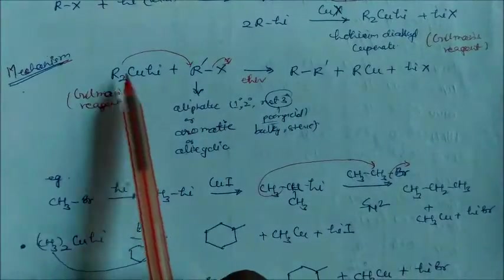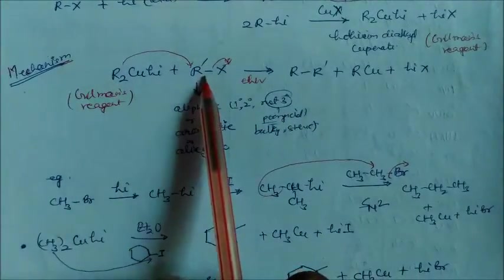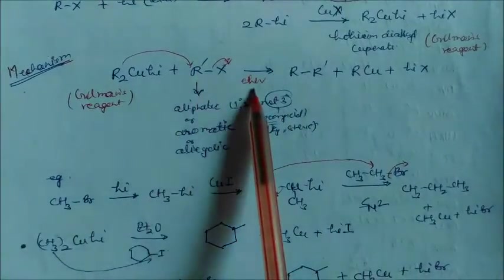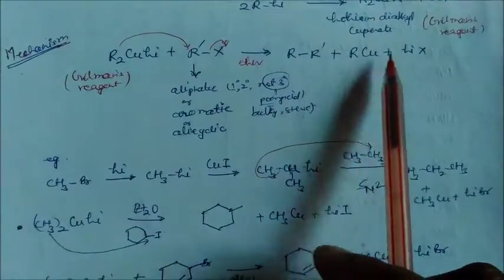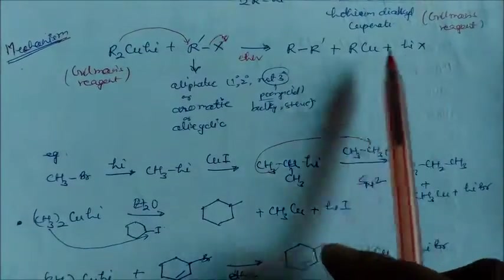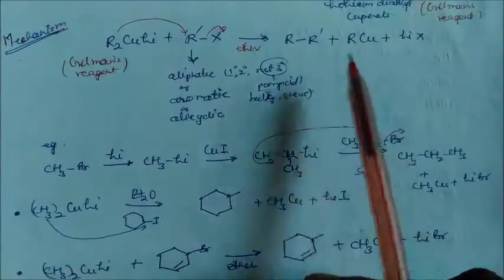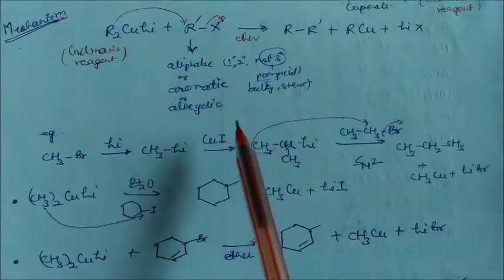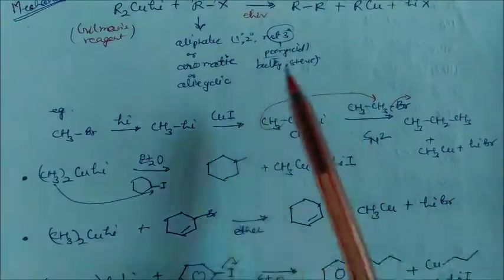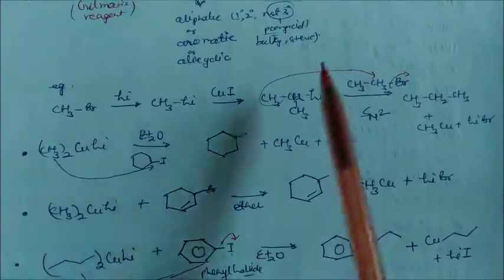So R from the Gilman's reagent will attack R' in the presence of ether, giving the product R-R', along with R-Cu and LiX as byproducts. This is the basic mechanism to get the symmetrical or unsymmetrical alkane.